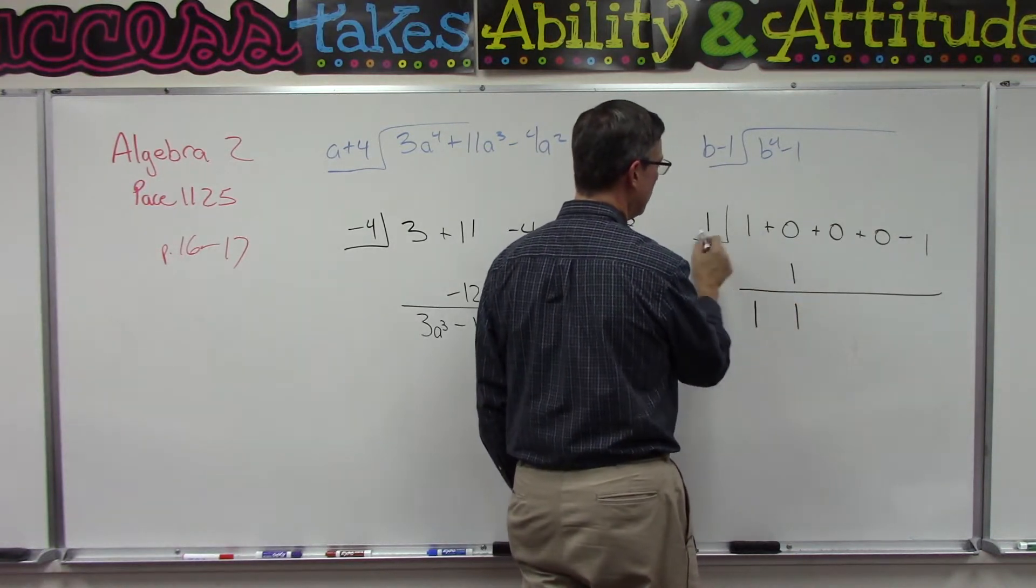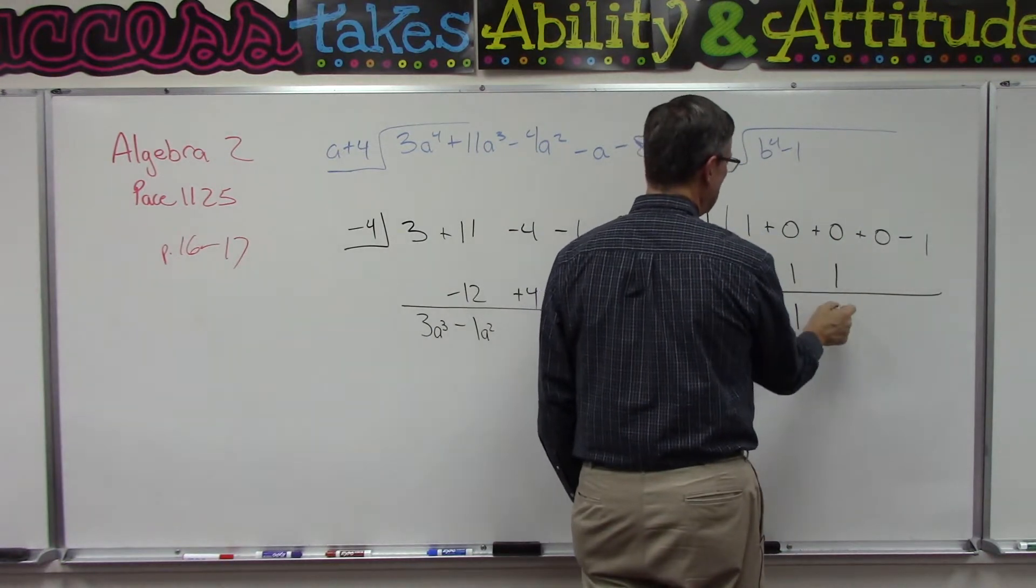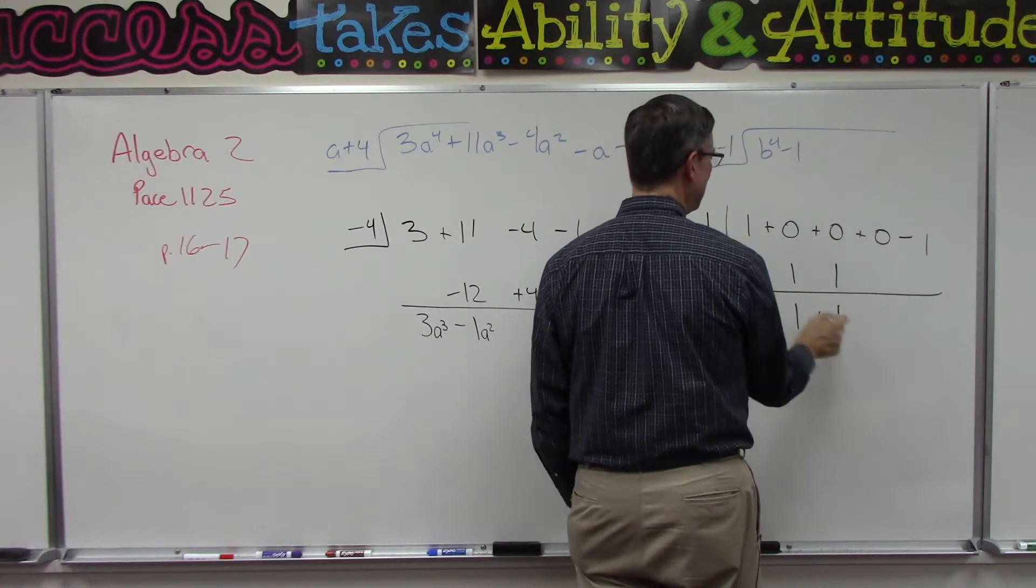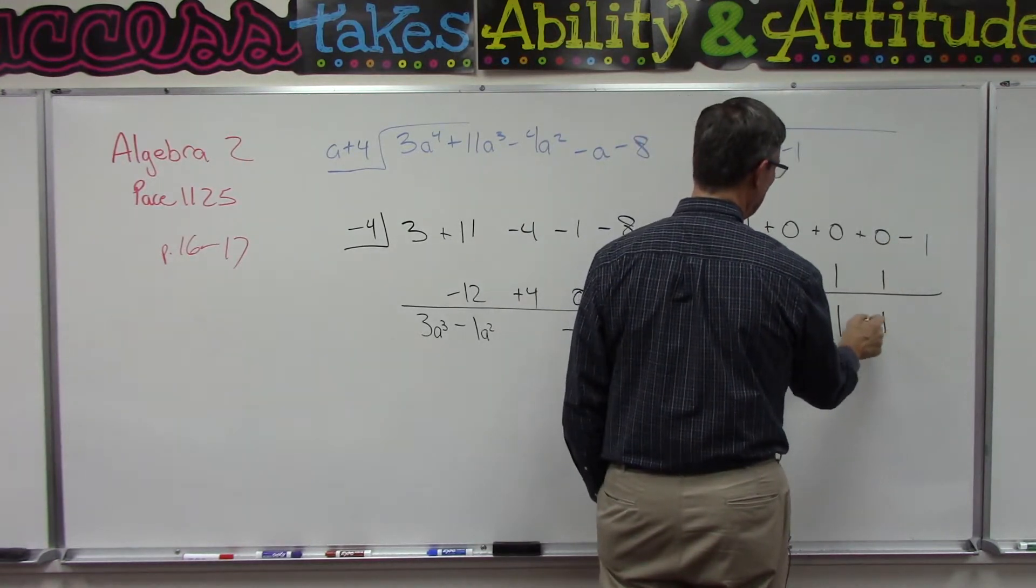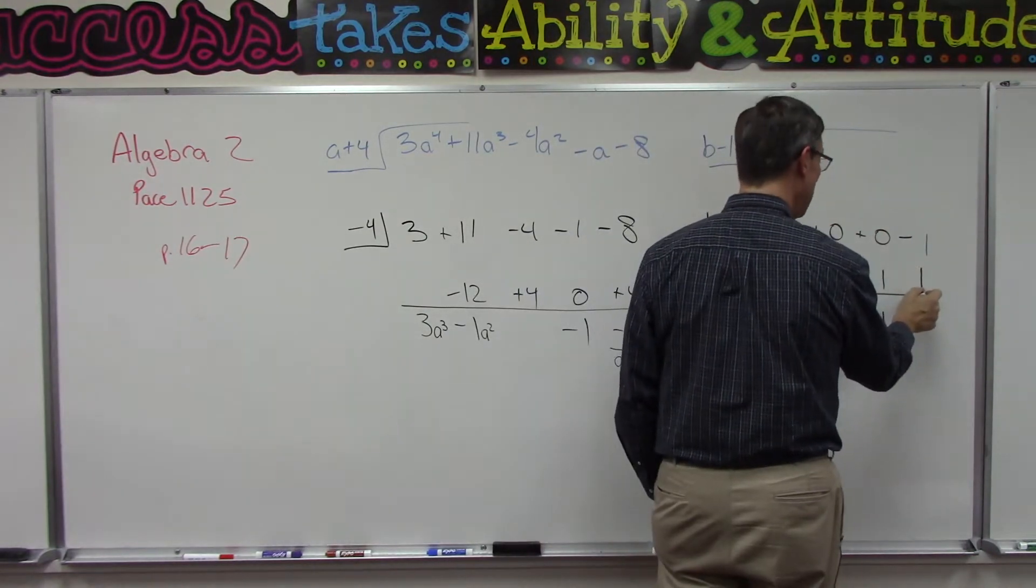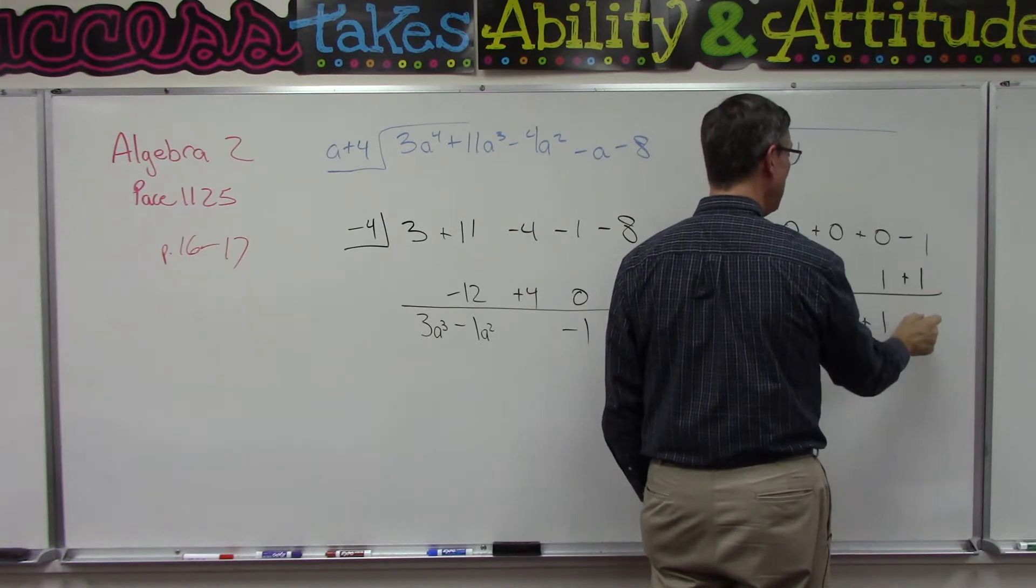1 times 1 is 1, add these, bring it down we have 1. 1 times 1 is 1, add, bring it down we have plus 1. 1 times 1 is 1, add and we get 0.